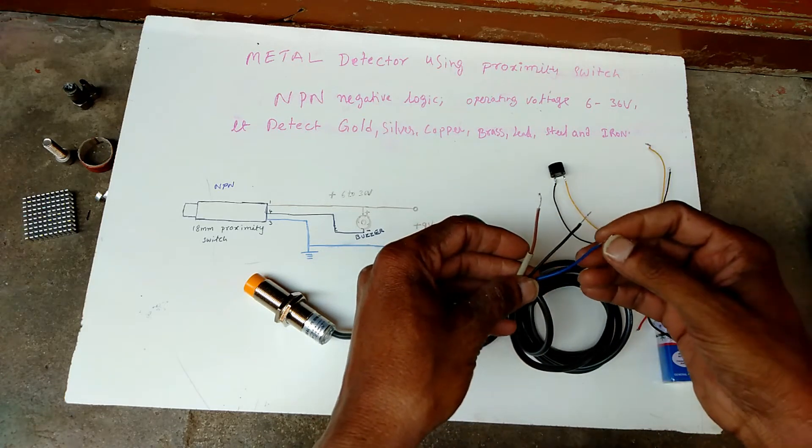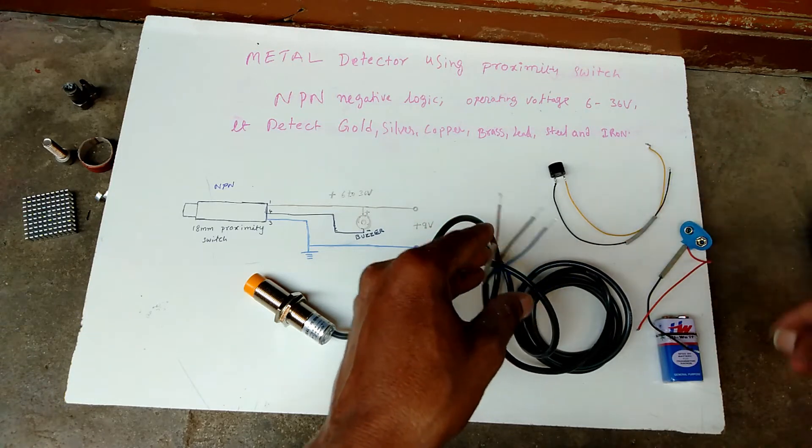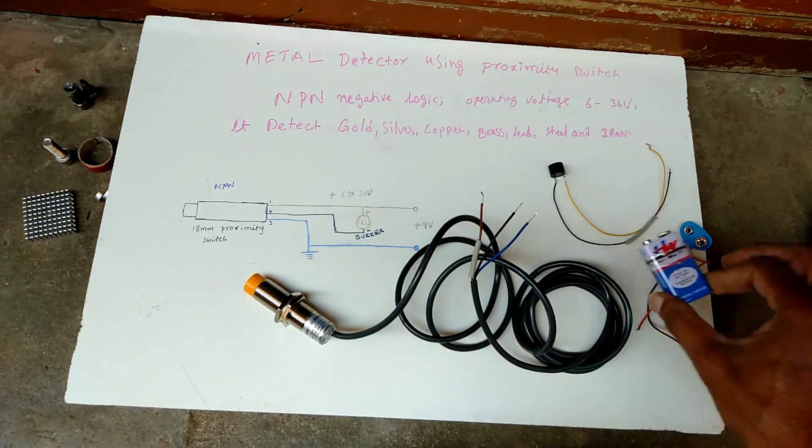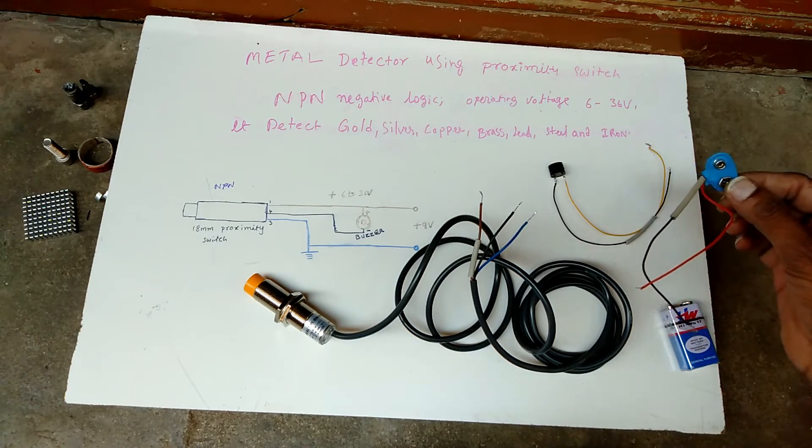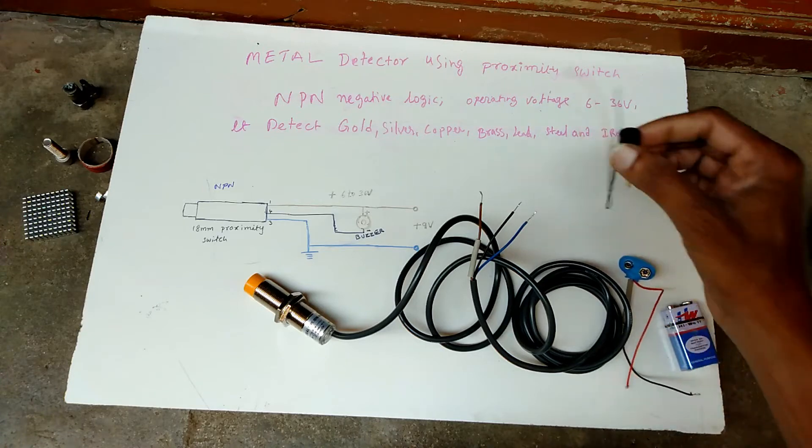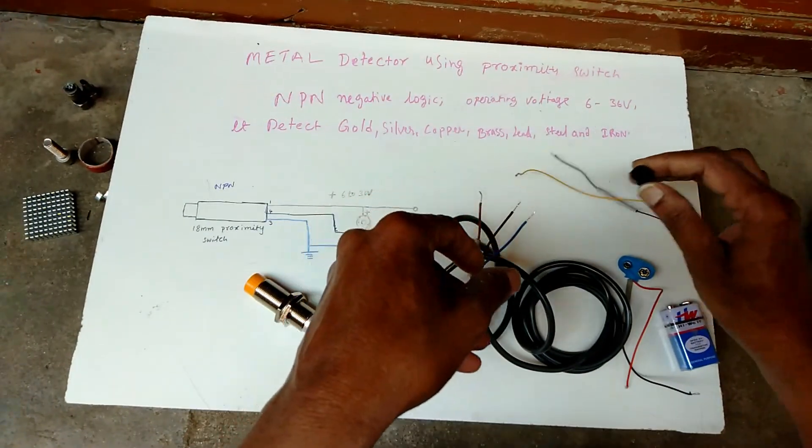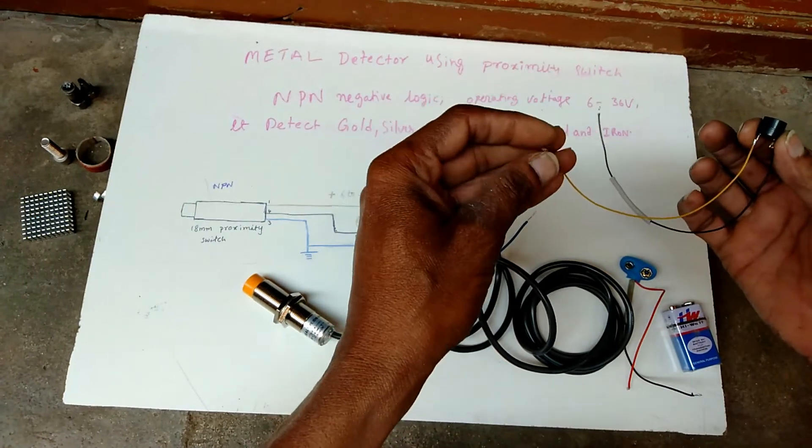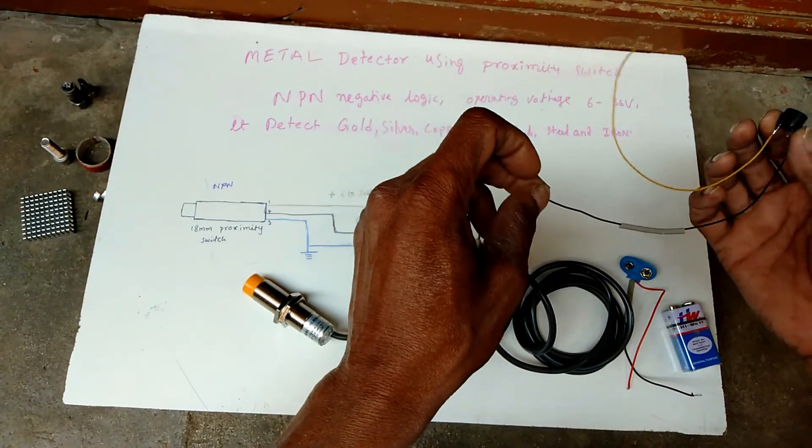Now I will show how to connect this, how to make this metal detector. I am using 9 volt battery, and this one battery connector, 9 volt battery connector, this buzzer, and yellow wire positive, and black wire negative ground.